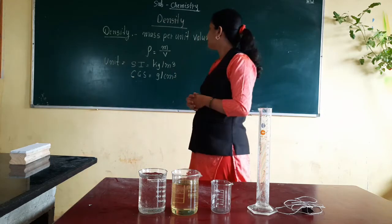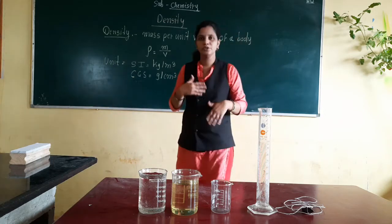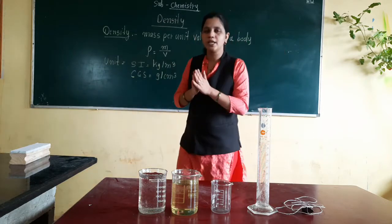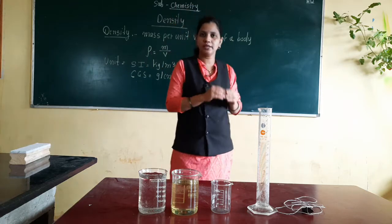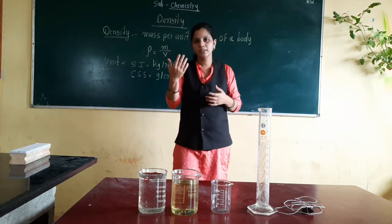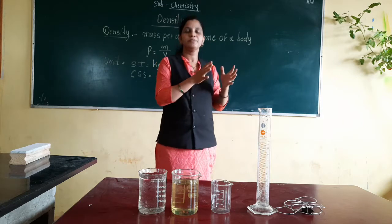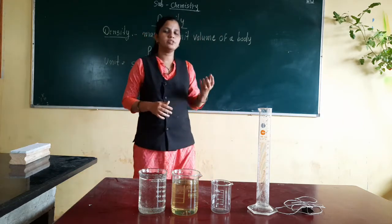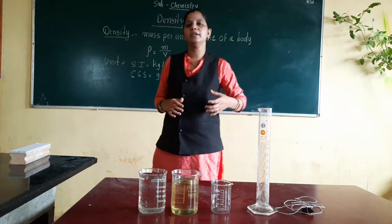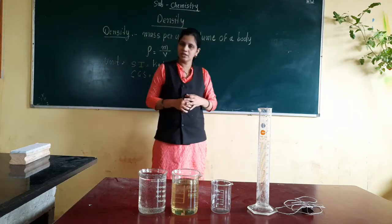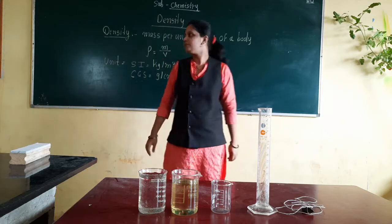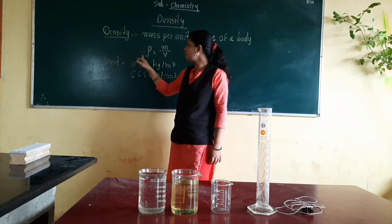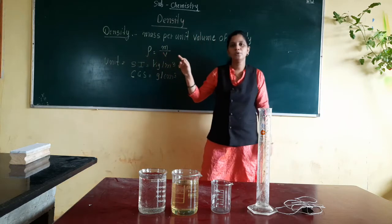Density means the mass per unit volume of a body. Whatever substance you take, to calculate its density you find the mass per unit volume — the mass of that substance divided by its volume gives you the density of that particular thing. This symbol here is the symbol for density, known as rho.